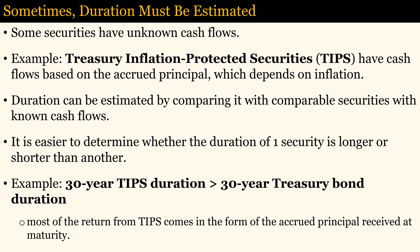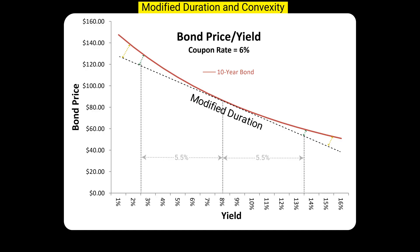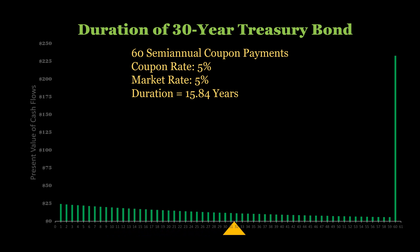It is easier to determine whether the duration of one security is longer or shorter than another. For example, 30-year TIPS have a longer duration than 30-year Treasury bonds, because most of the return from TIPS comes in the form of accrued principal, which is only received at maturity. This graph shows the greater interest rate sensitivity of long-term bonds over short-term bonds — the curve for the 10-year bond is steeper than the curve for the 3-year bond. Duration is the first derivative of the price-yield equation for bonds and is the tangent line at the current bond price. Graphically, the duration of a bond can be envisioned as a fulcrum placed under a seesaw to balance the weights of the present values of the coupon payments and the principal payment.